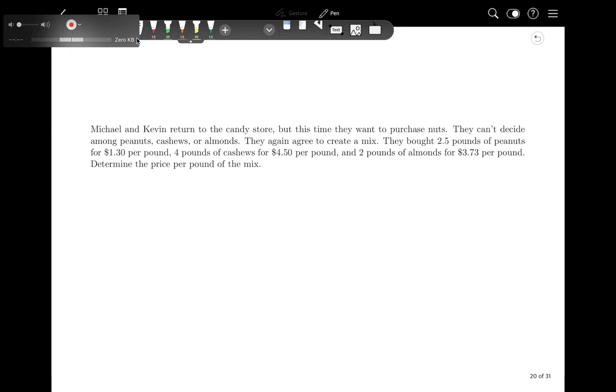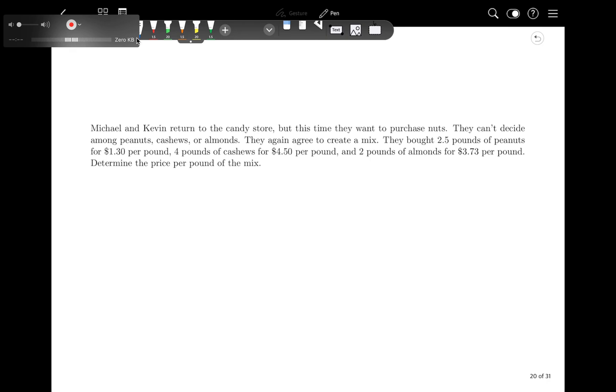And then Mike and Kevin went back to the candy store, and they want to do the same idea. Again, once again here, the weights are actual weights. So the weights are 2.5, 4, and 2. And then the values are actual values, dollars per pound. So 1.3, 4.5, and 3.73.